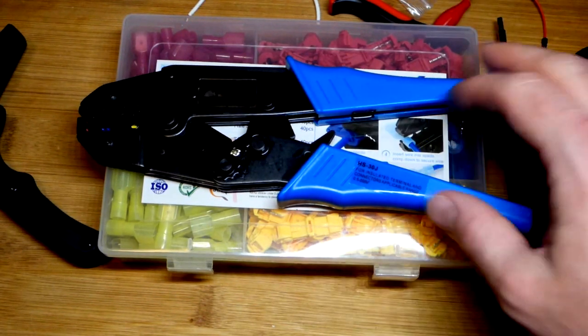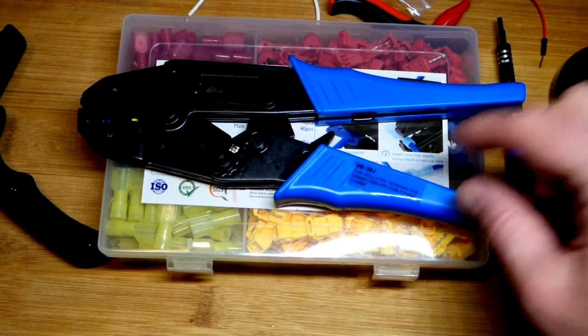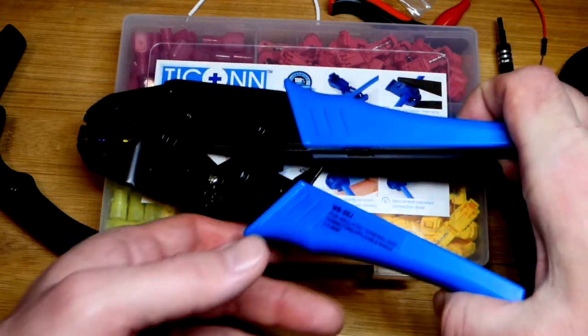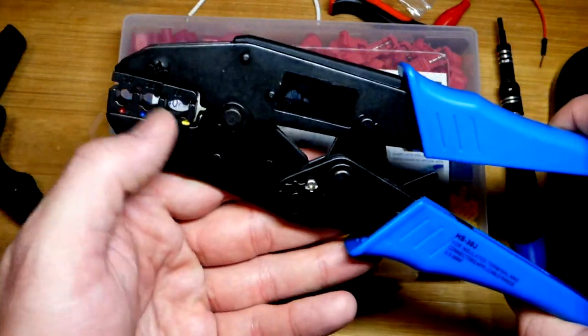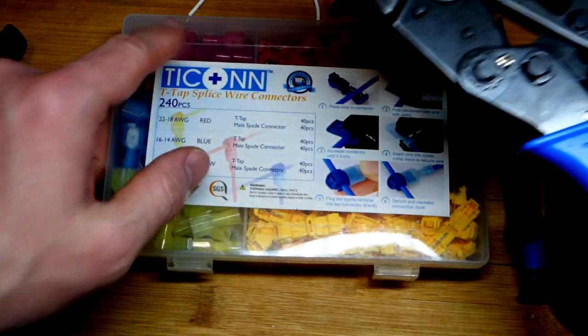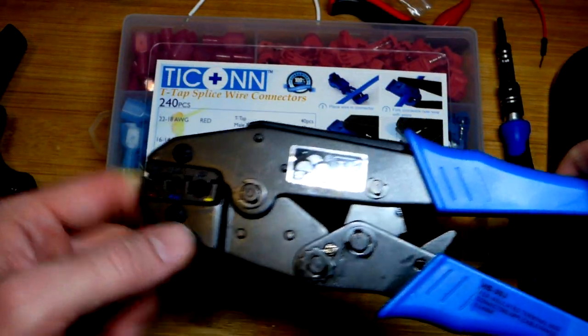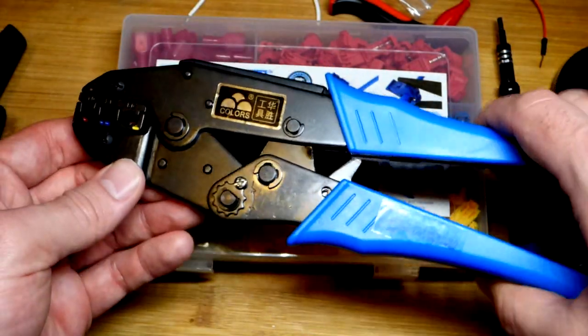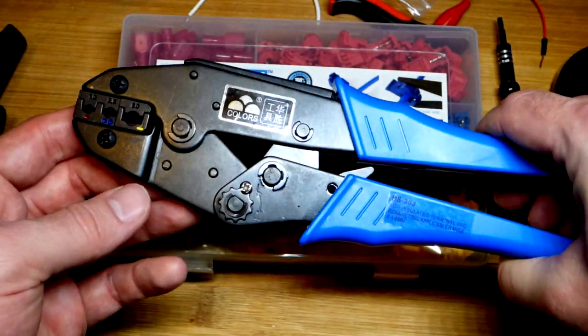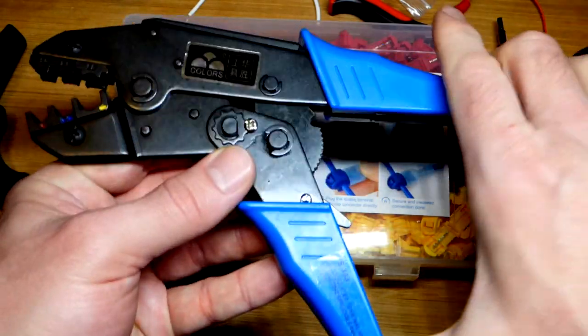In this video, we're going to take a look at this crimping tool. This is a ratcheting crimper for different connectors. We got yellow, blue, and red in this kit. These are T-Splice. It's ratcheting - it locks in place until you squeeze it enough, and then it releases and opens.